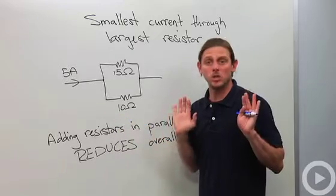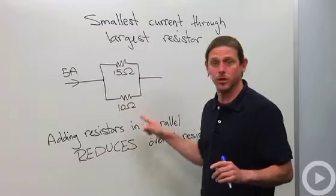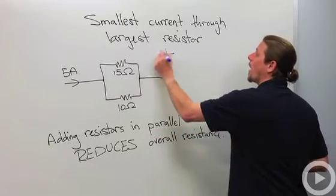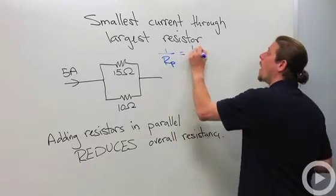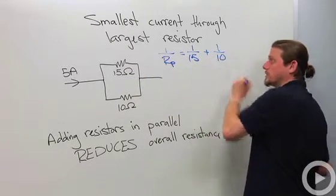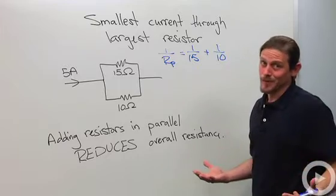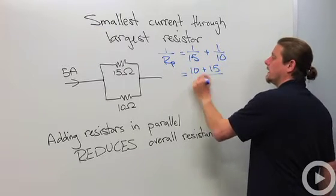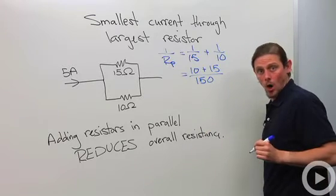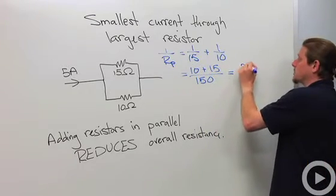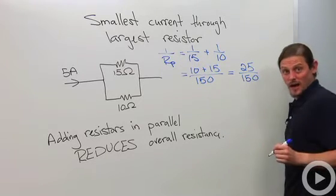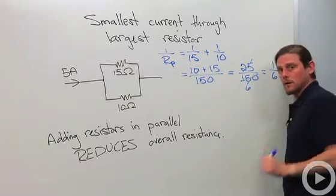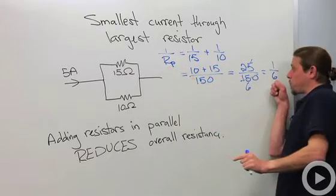All right, so how are we going to determine how much current goes through the 15 and how much current goes through the 10? It's actually really easy. What we're going to do first is we're going to add these two resistors in parallel. Now remember, adding in parallel is a little bit tricky, so we'll say 1 over r parallel equals 1 over 15 plus 1 over 10. All right, now it's like middle school, we got to cross multiply. So it'll be 10 plus 15 over 150. 10 plus 15 is 25 over 150, and if we do this carefully we can cancel. So this gives us 1 over 6. 1 over r parallel is 1 over 6, so that means r parallel equals 6.